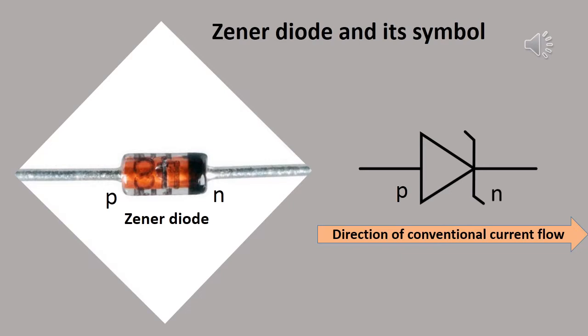Today's topic is about Zener diode. Zener diode is one of the electronic components widely used in the field of electronics as well as in electronic circuit boards. Mainly, Zener diode is used in the circuit of the voltage regulator. In the picture the Zener diode is shown and nearby its symbol is also given. In the case of Zener diode there are two ends — one is P end and another one is N end. The N end is represented by a black color ring.